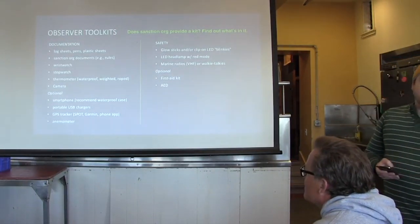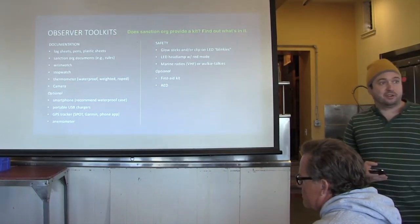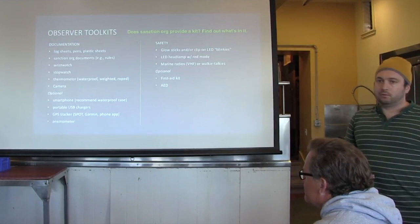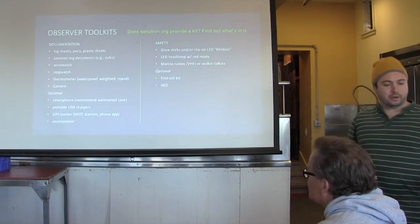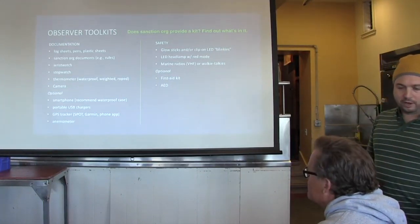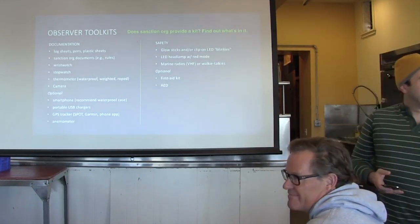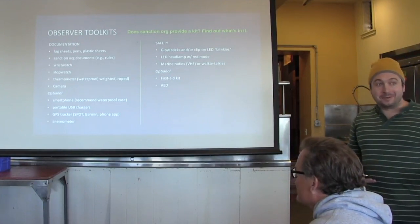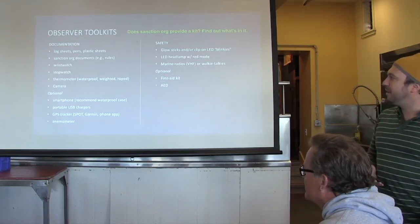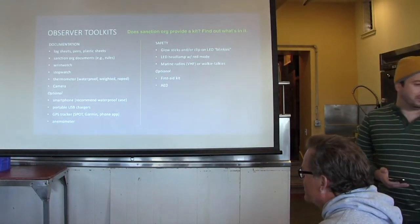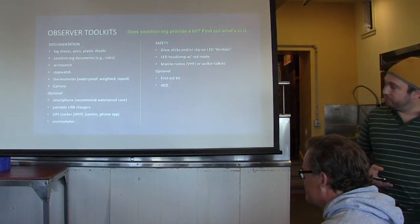Thermometer for getting the water temperature. One of the floaty thermometers, bathtub thermometers. You want a weighted fly fishing style thermometer that will sink. Tie it off with a rope. Try to avoid, if you are dropping the thing in the water, even if it's tied to something, don't do it near the prop. It's happened more than once. Then you don't have any way to get the water temperature. Thermometer also works for getting the air temperature, so you can keep it out in the shade on the boat somewhere, not in the sun.